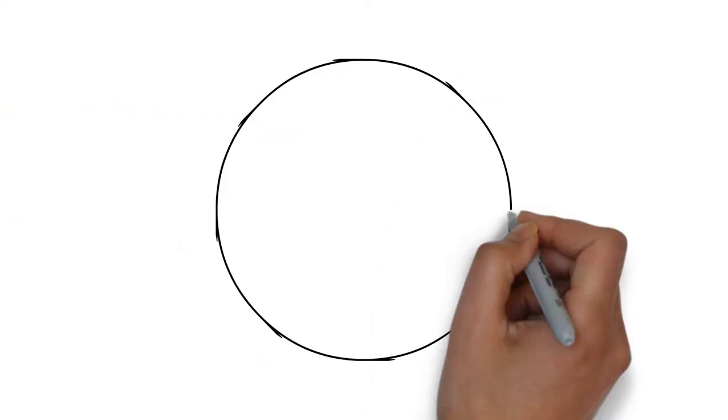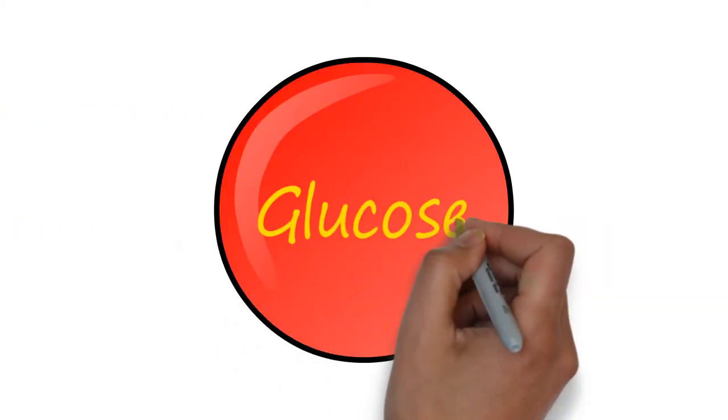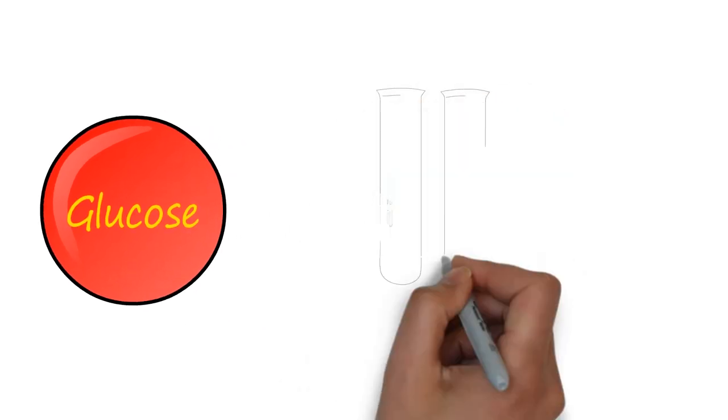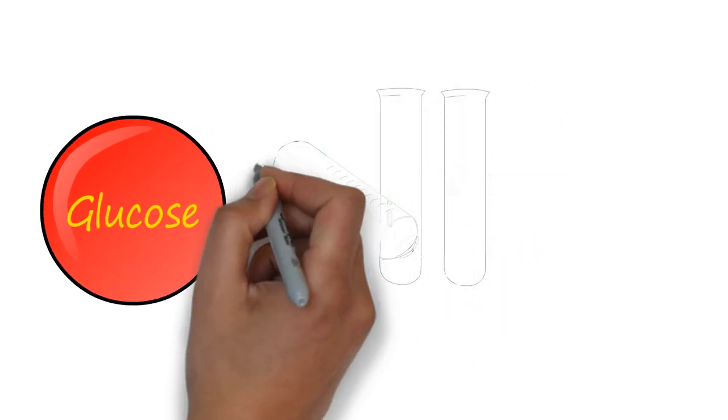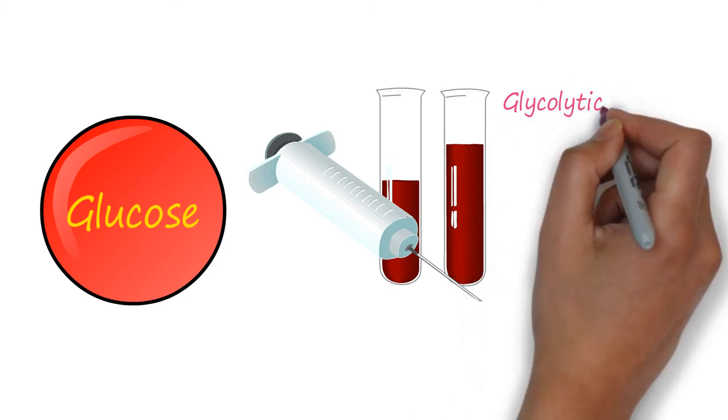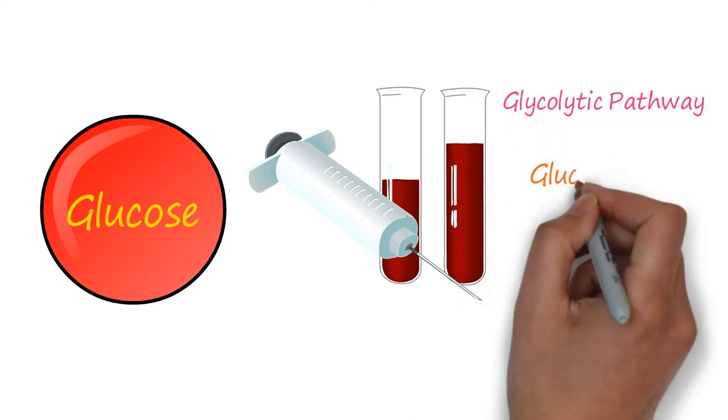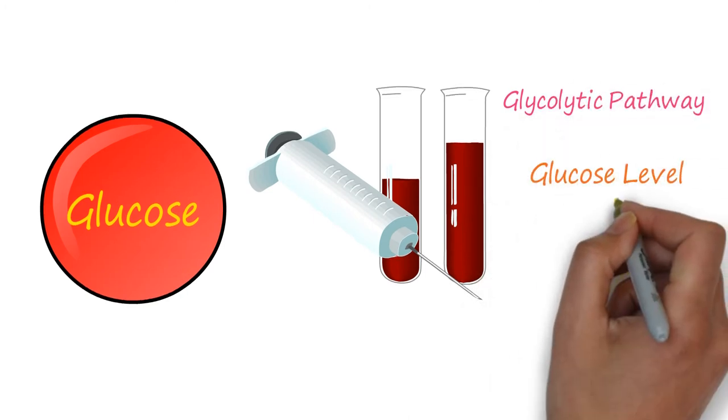Glucose is the main energy source of red blood cells. The red blood cells utilize the glucose present in the blood sample through the glycolytic pathway. As a result, the glucose level in the blood sample will be reduced.